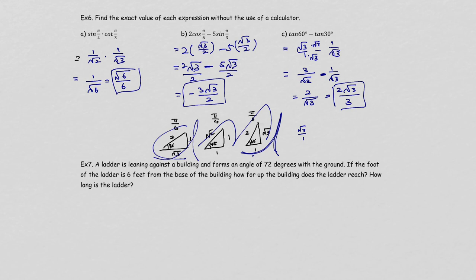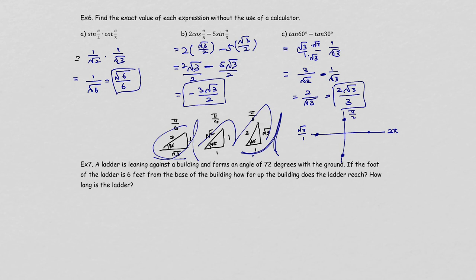If you remember those three special triangle shapes for 30, 45, and 60 degrees, the other values you need to remember are the quadrantal angles: 90 degrees, 180 degrees, 270 degrees, and 360 degrees, or pi over 2, pi, 3 pi over 2, and 2 pi. Their sine and cosine values are: at 90 degrees, sine is 1 and cosine is 0; at 180 degrees, sine is 0 and cosine is negative 1; at 270 degrees, sine is negative 1 and cosine is 0; at 360 degrees, sine is 0 and cosine is 1.